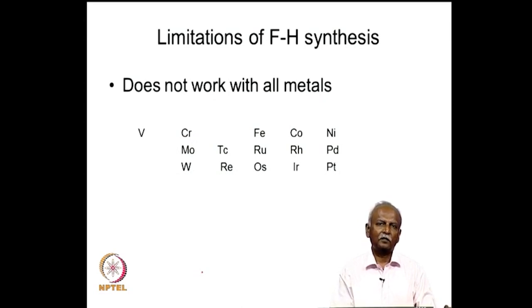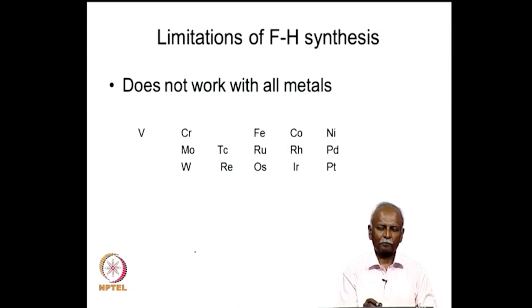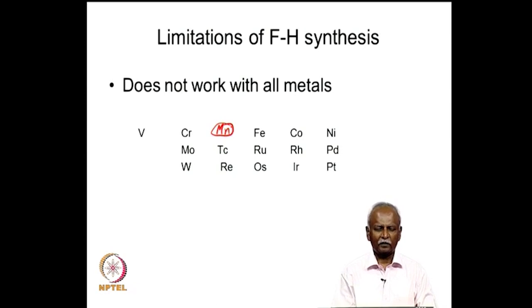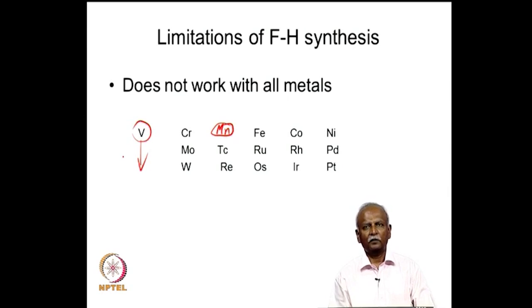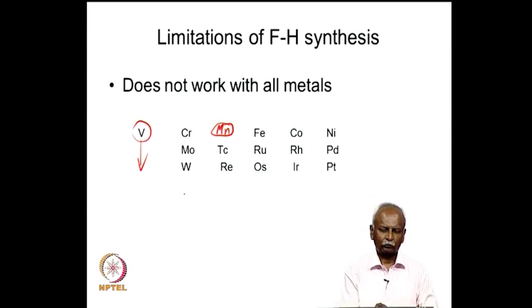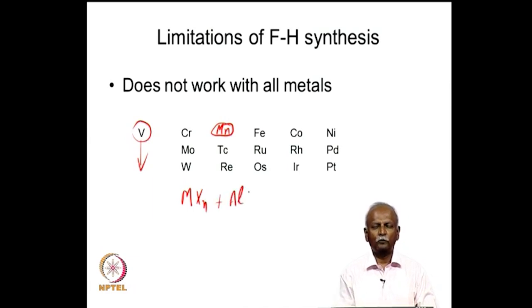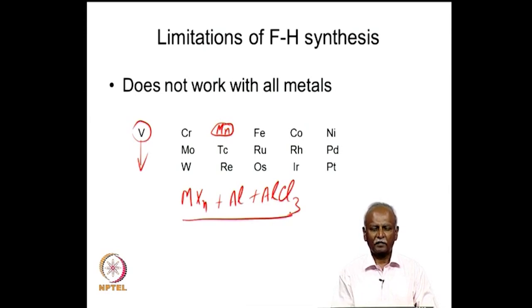There are limitations in terms of the metal - it works for most of the metals in the transition series, but there are some surprising gaps. For example, manganese is a metal atom not found in this series, and in the vanadium series only vanadium is a suitable candidate. The Fisher-Hafner recipe is: take the metal chloride MXn, then reduce it with aluminum in the presence of AlCl3. That is the Fisher-Hafner recipe for making a metal sandwich complex with arenes.